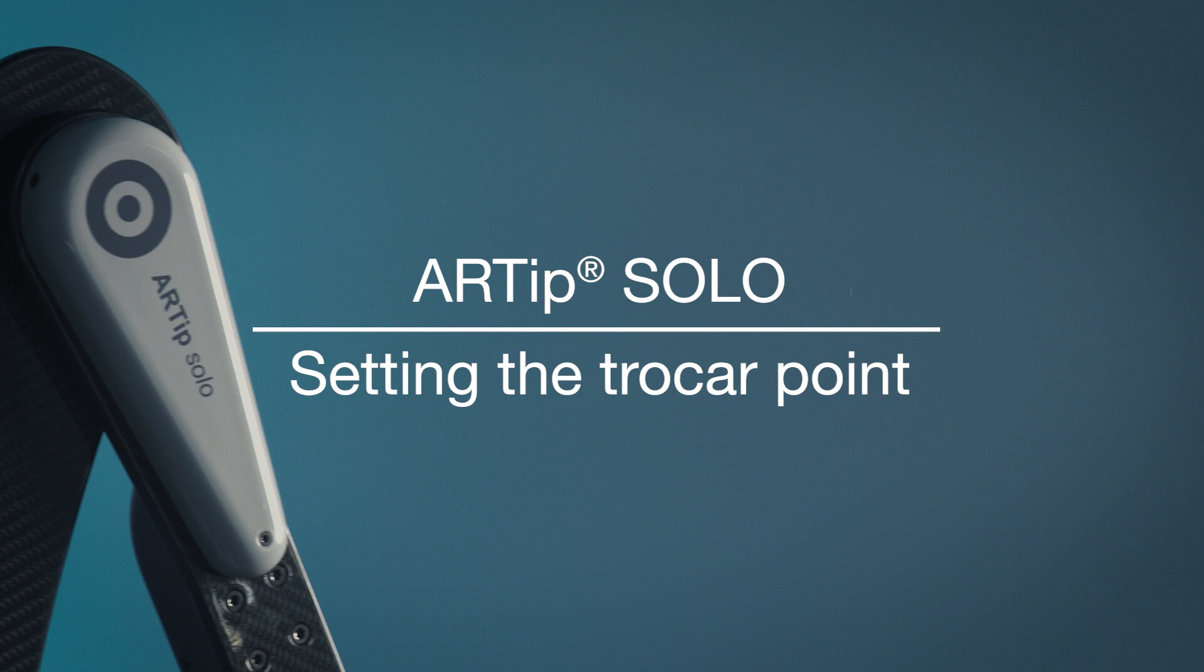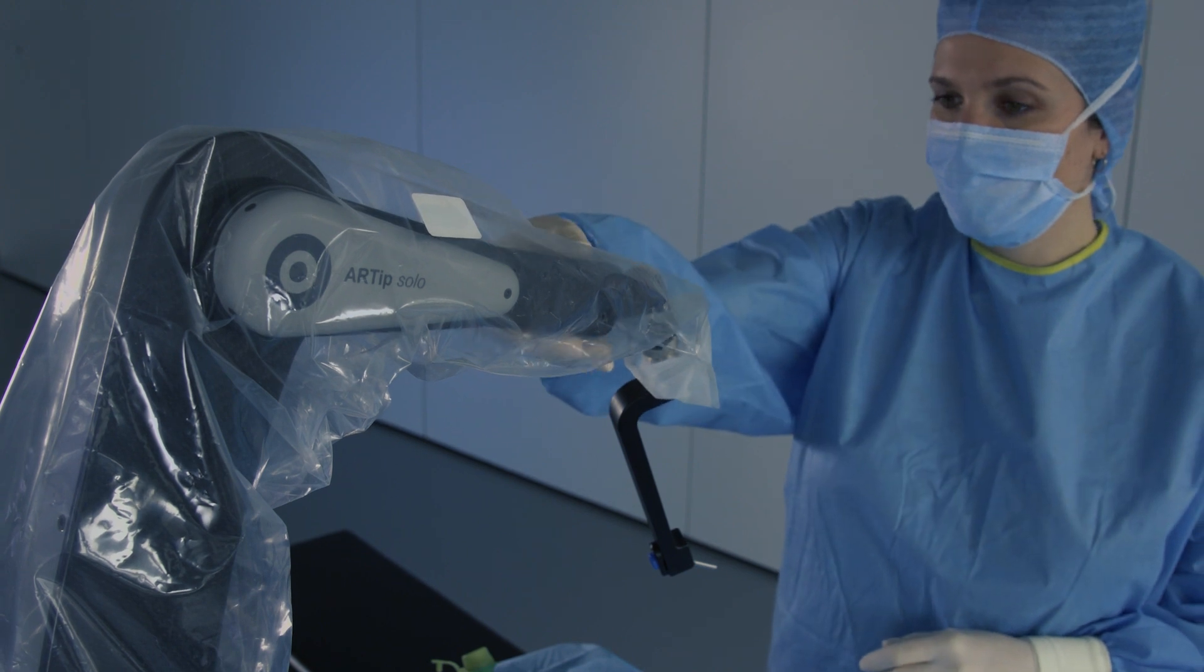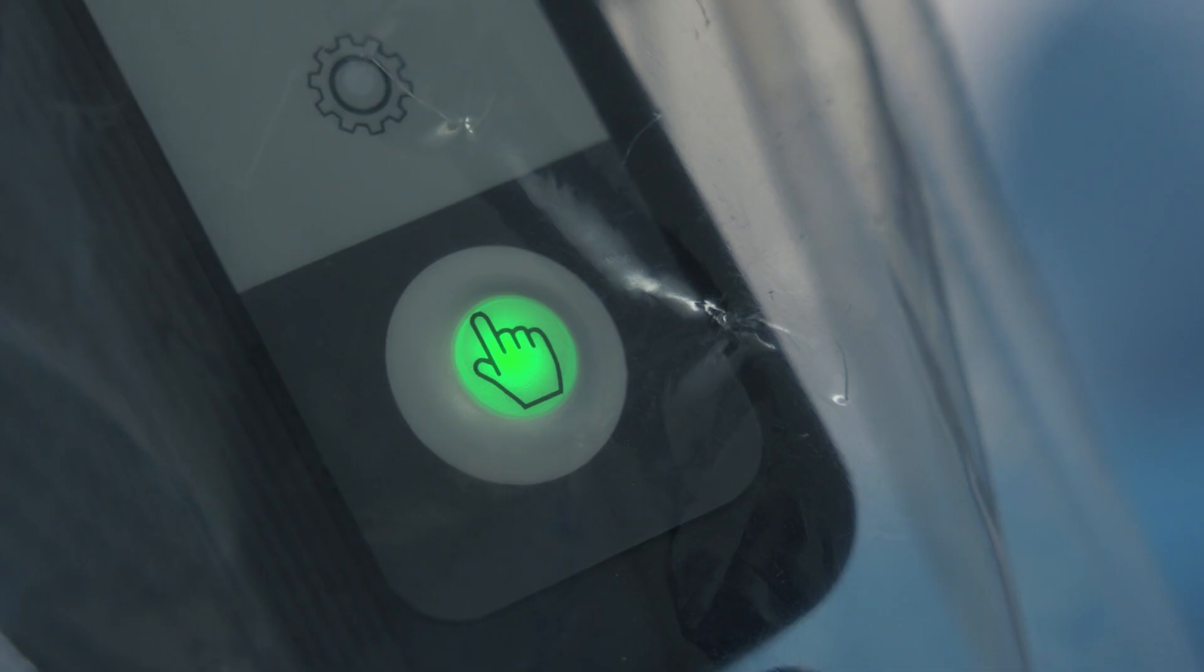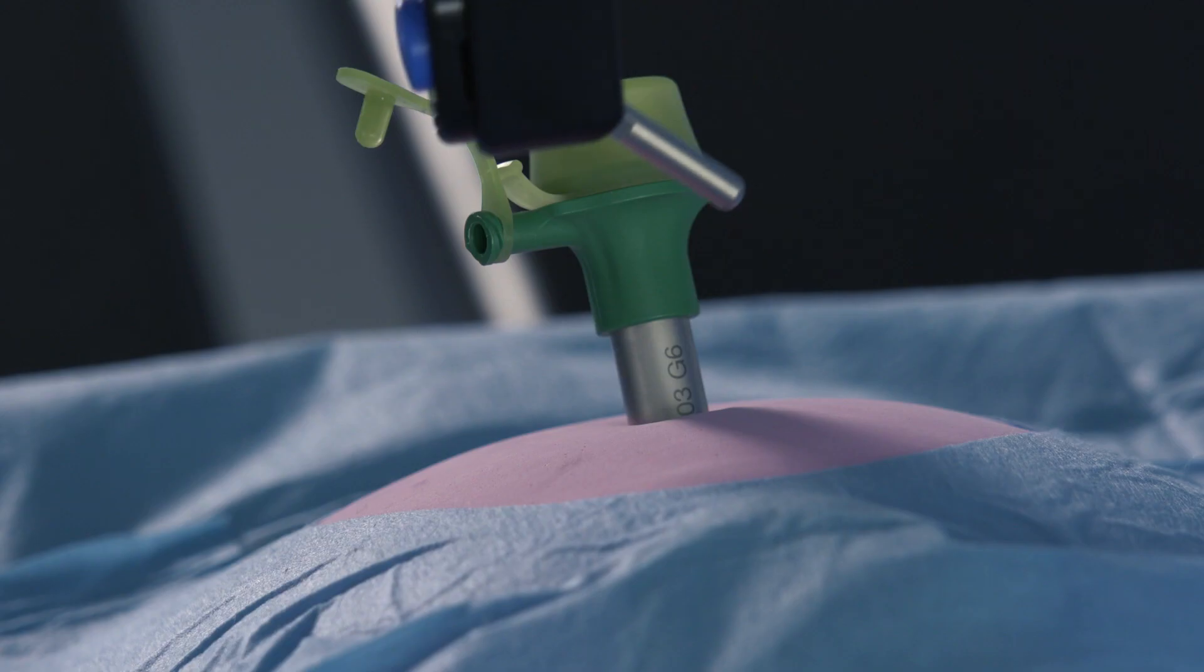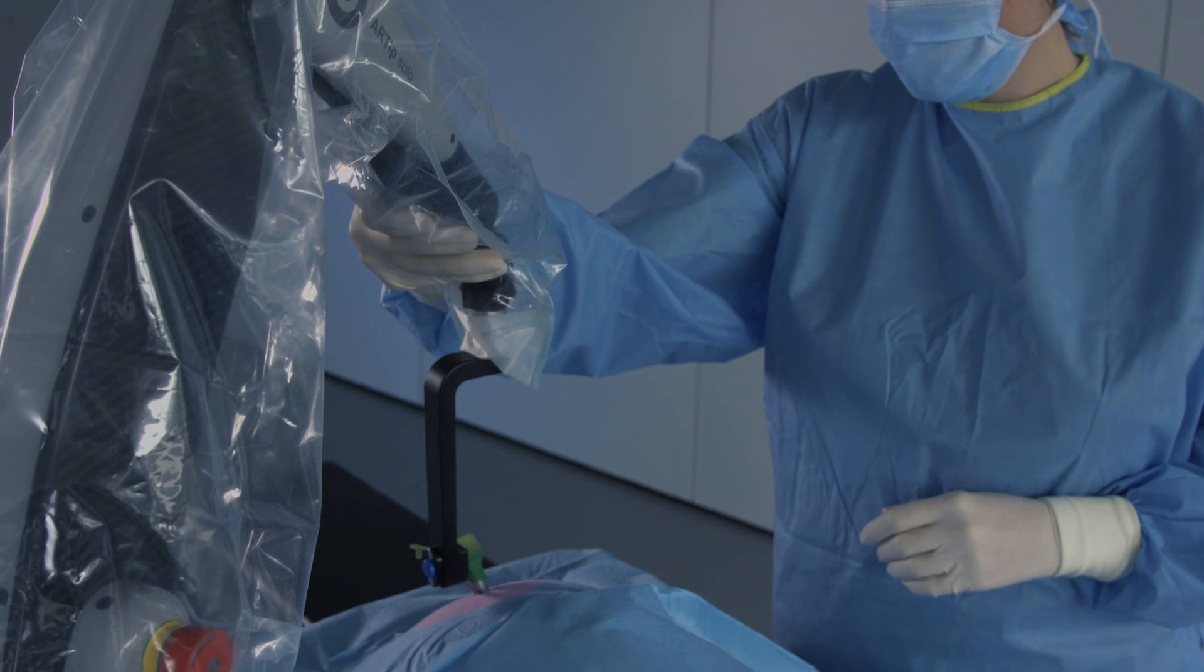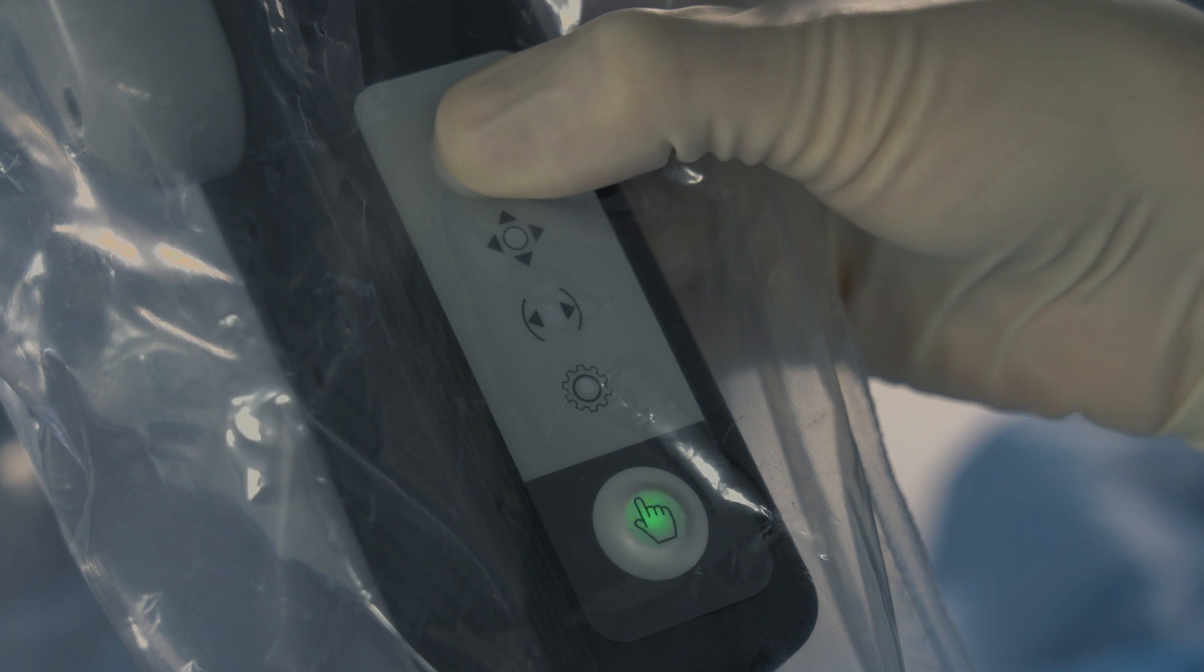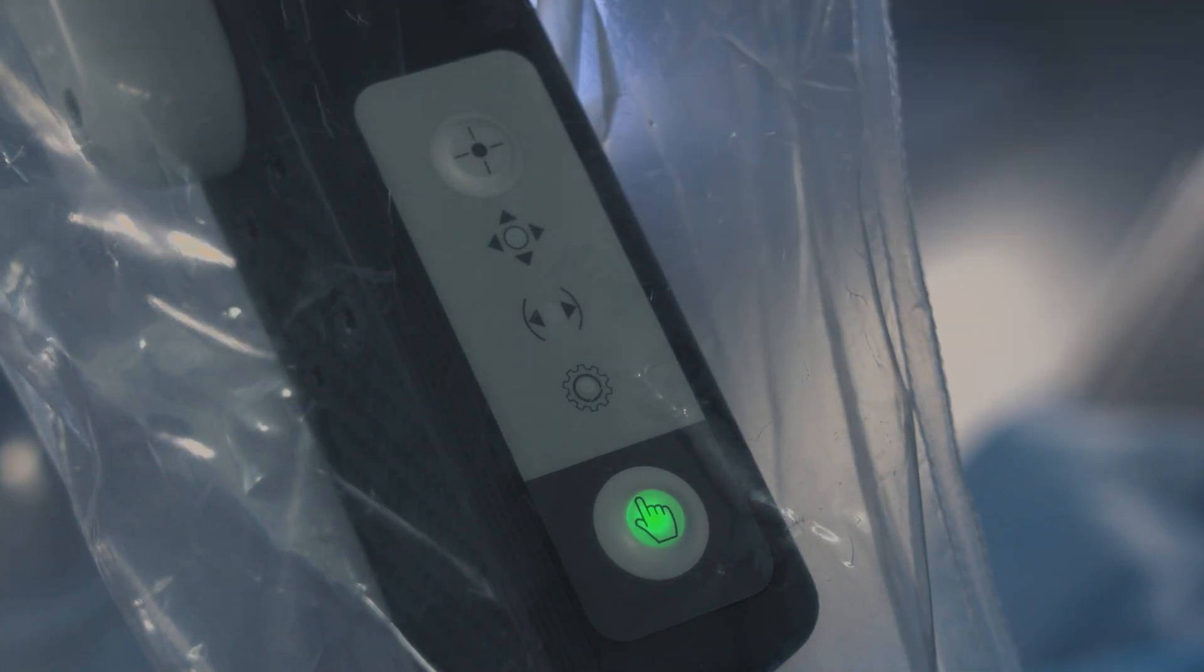If utilizing the joystick feature, the trocar point must be set to establish an access point between the patient and the R-Tip Solo. Move the R-Tip Solo by pressing the unlock button on the control panel, directing the tracer pin to the point where the trocar meets the patient. Once in position, press the top button for about two seconds until you see a blinking green. This means you have successfully set the trocar point.